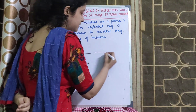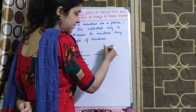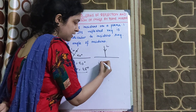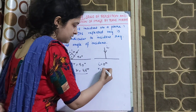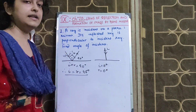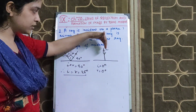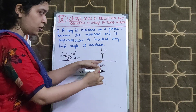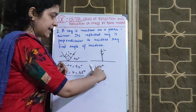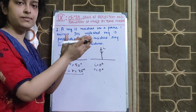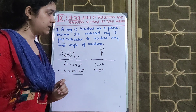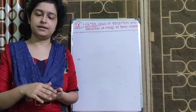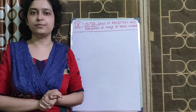There is one special case: if an incident ray falls along the normal — that means I equals 0° — the reflected ray retraces its path. If I is 0°, then R is 0°, so the ray reflects back along the same direction. That's all for the theory part of Chapter 7a. We will resume with the remaining parts of Chapter 7 and the numericals in the next video sessions.